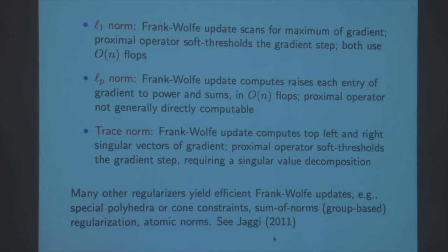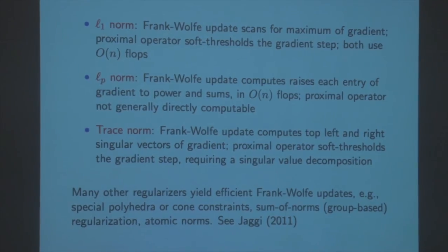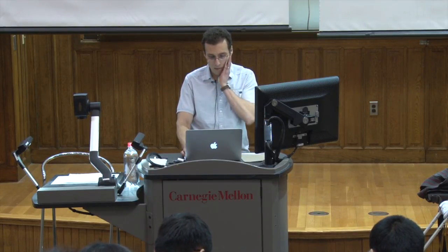Special polyhedra, special cones, sum of norms, atomic norms - all these things have efficient Frank-Wolfe updates. You can take a look at papers by Martin Jaggi where he gives a bunch of nice examples. Regarding the quadratic norm form: that's actually fairly easy to do with Frank-Wolfe, but requires computing an inverse of Q. It's closed form, but requires the inverse of Q. So it depends on whether Q is structured.